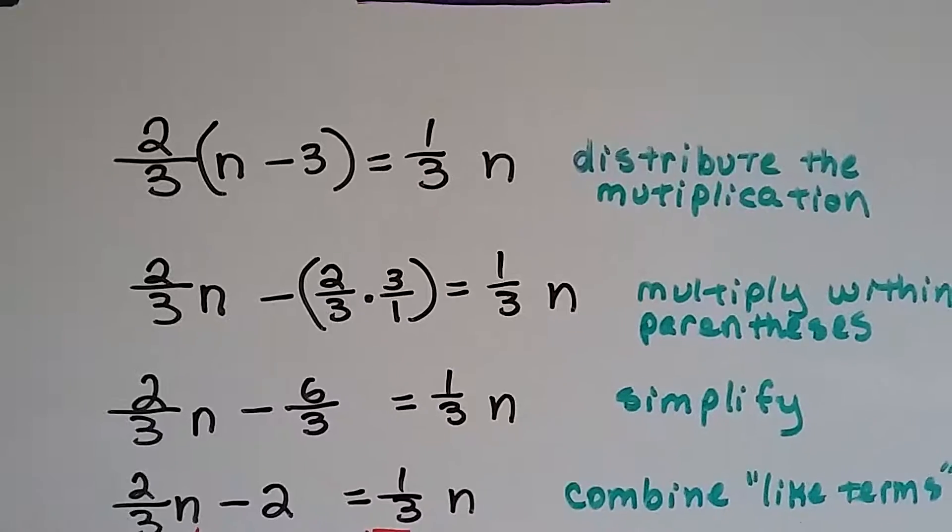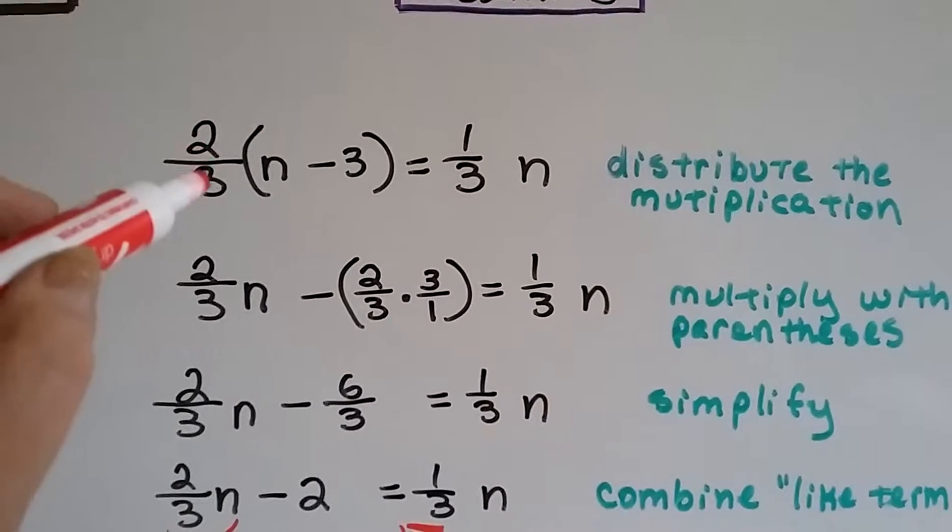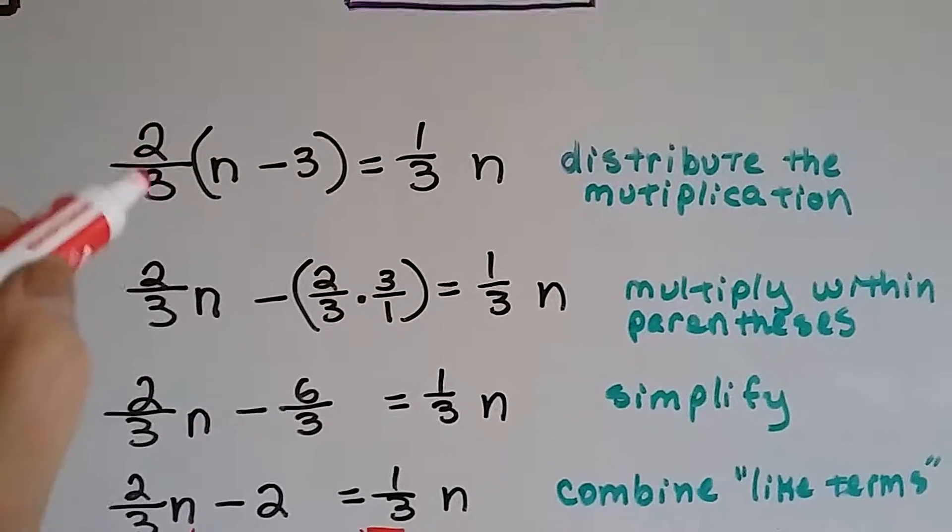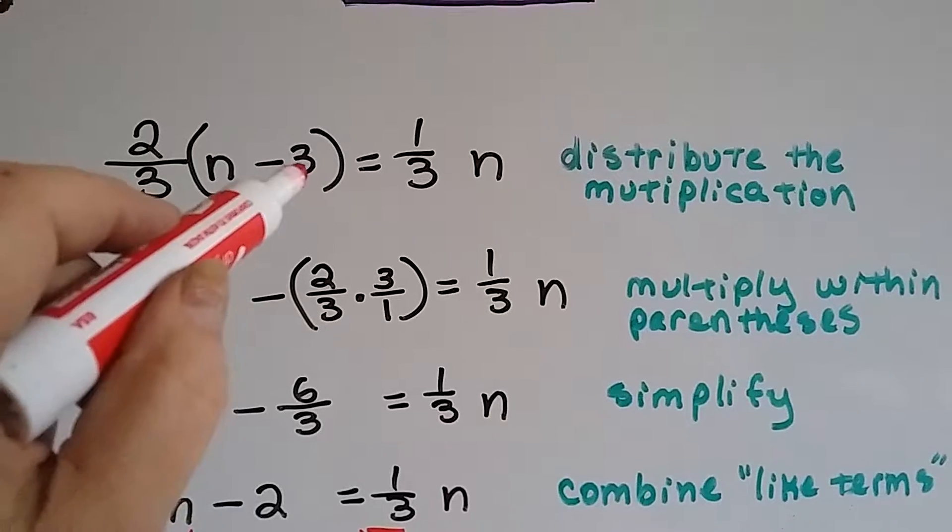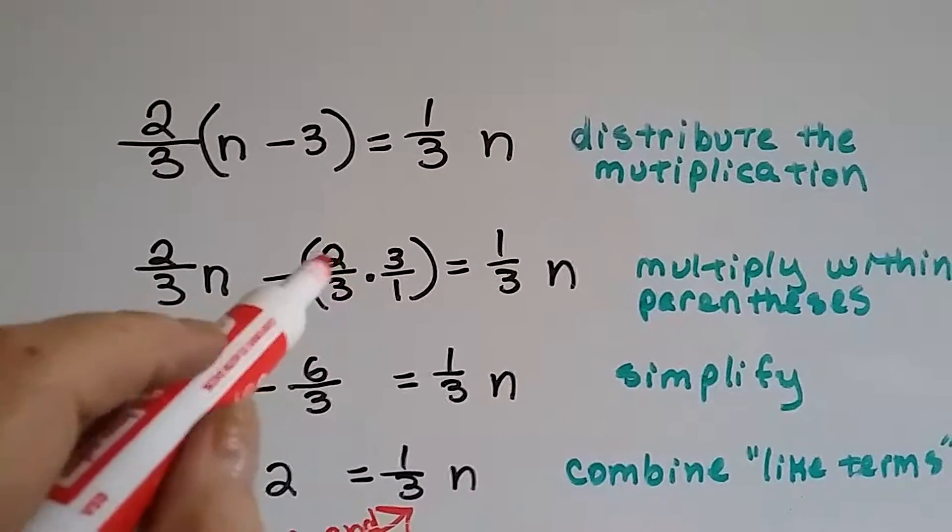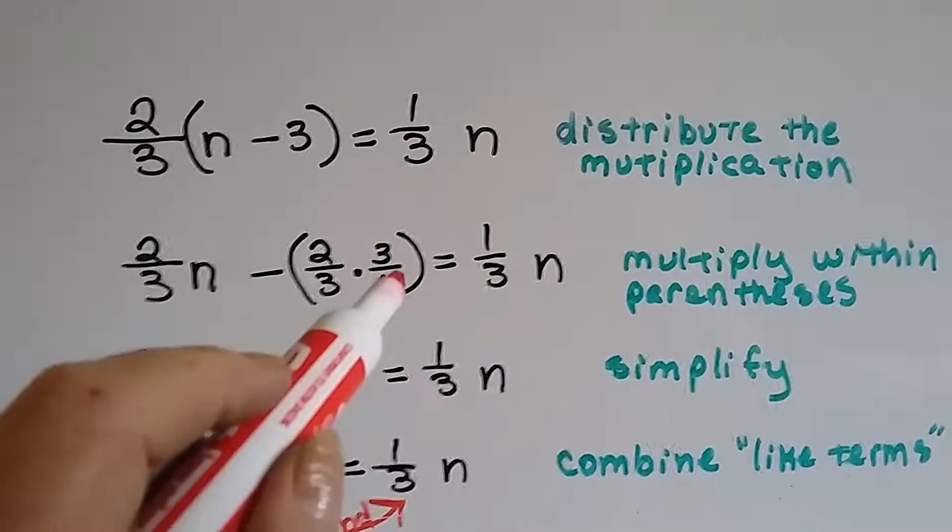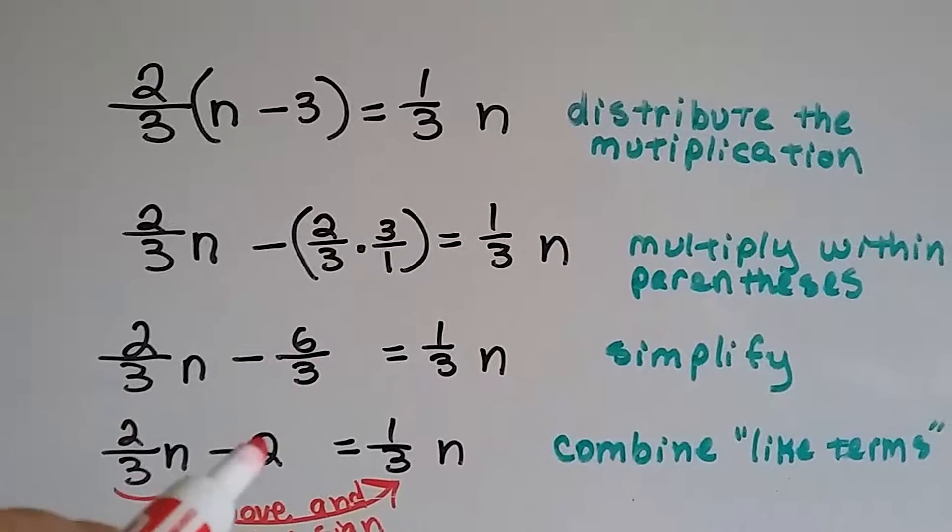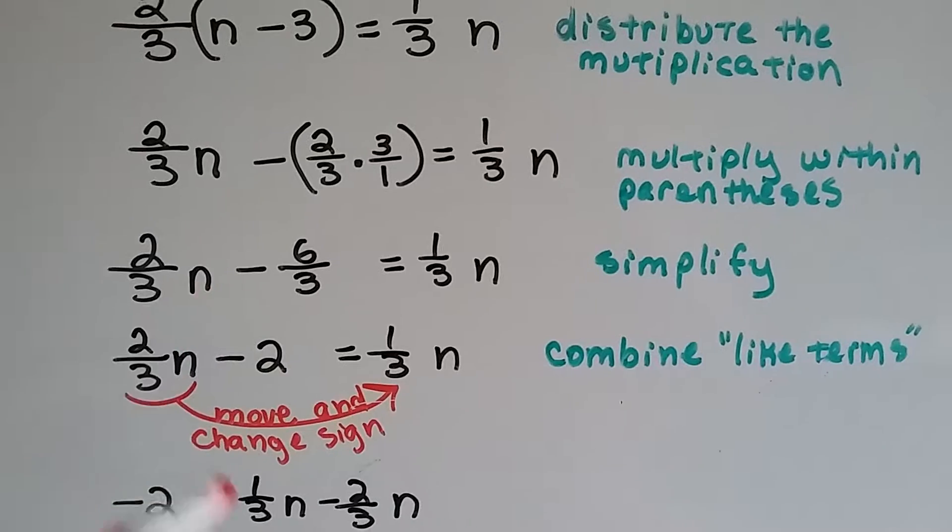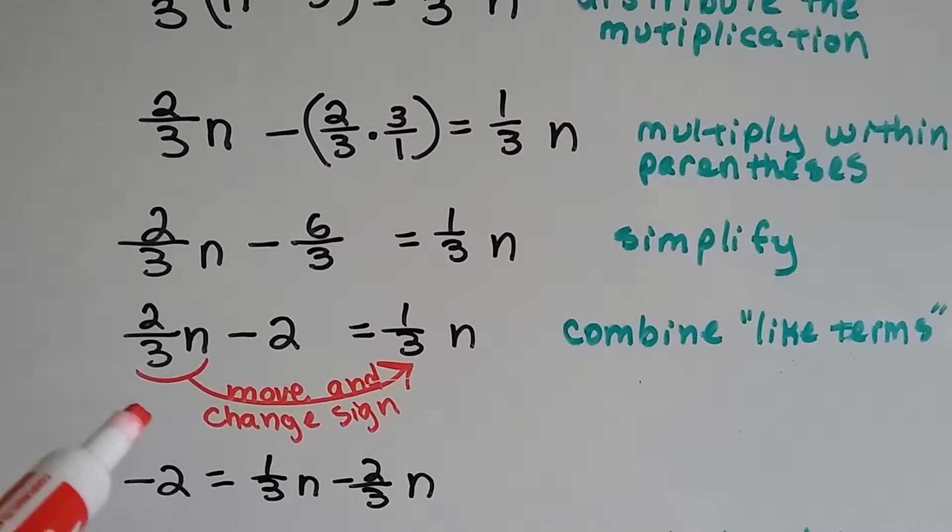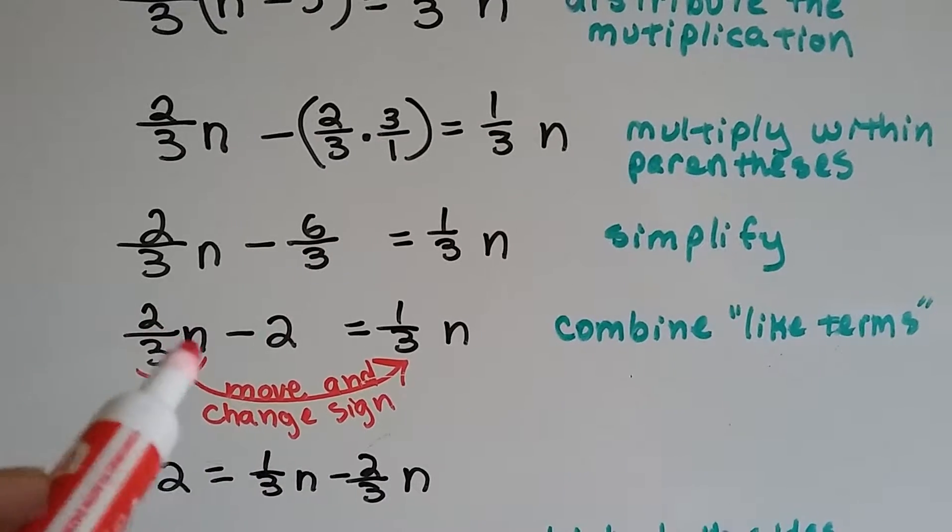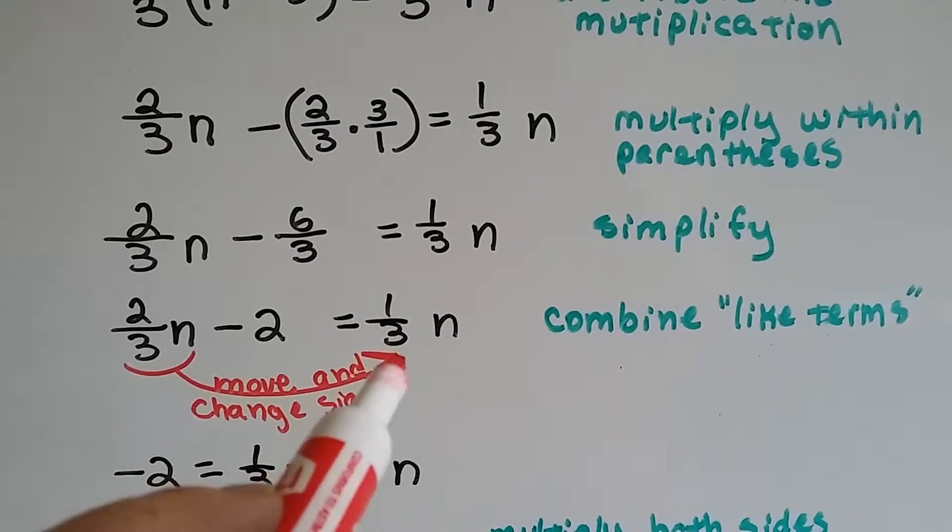All right. So, the first thing we're going to do is distribute the multiplication. 2 thirds times n, here we go, minus, here's our minus, 2 thirds times 3. So, now we need to do 2 times 3 is 6 and 3 times 1 is 3. That gives us 6 over 3, which gives us 2. So, now our equation, after we've multiplied what's in the parentheses and simplified it and combined like terms, is what our next step is. We end up with 2 thirds n minus 2 equals 1 third n.